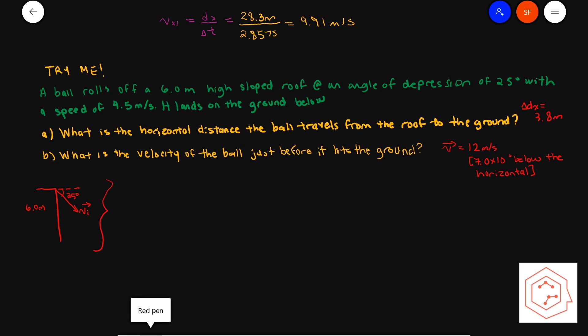For part a, dx equals 3.8 meters. For part b, the velocity equals 12 meters per second at 70 degrees below the horizontal, remembering that you have two significant figures. That concludes this video — next time I'm going to be talking about relative motion.